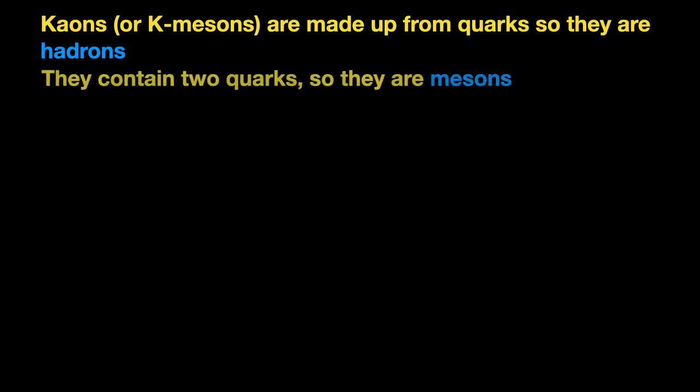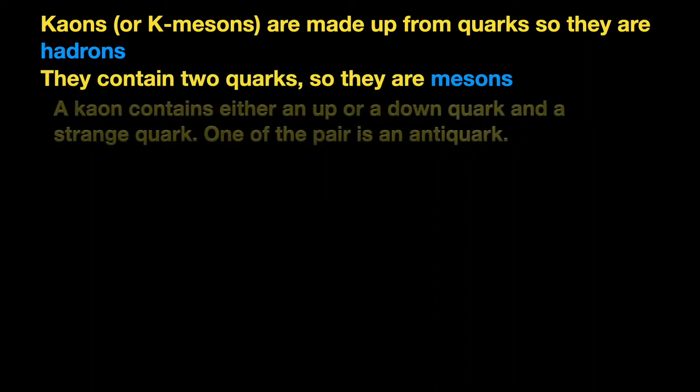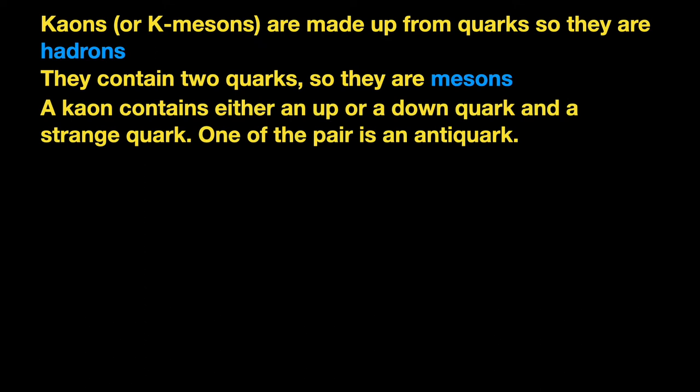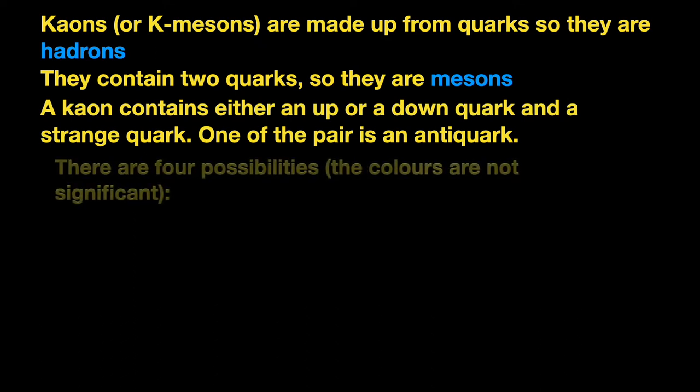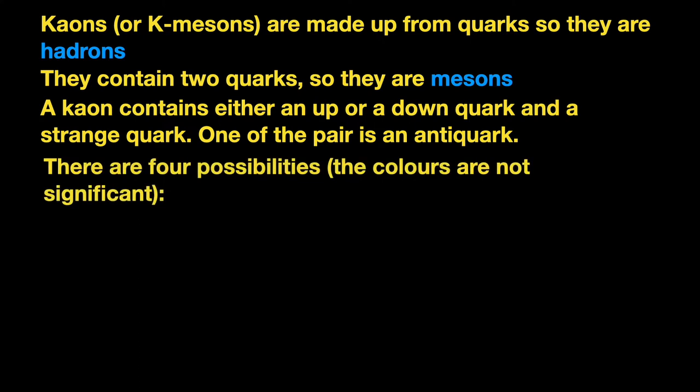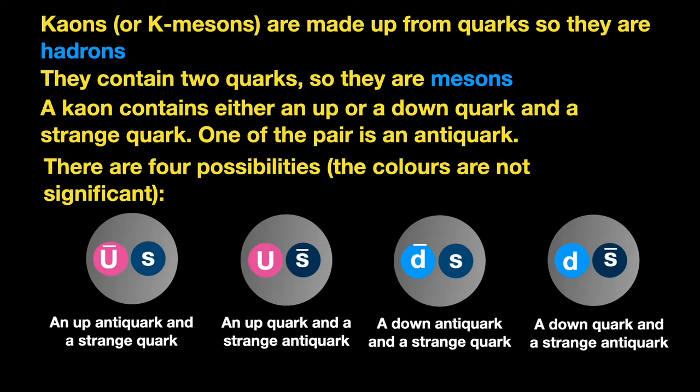Amongst the first strange particles to be studied were K-ons or K-mesons, and these are the strange particles that are most often used in examination syllabi. Because they're called mesons, they must contain two quarks. They actually contain either an up or a down quark together with a strange quark. One of this pair is always an anti-quark. That gives four possible structures, as you can see here.